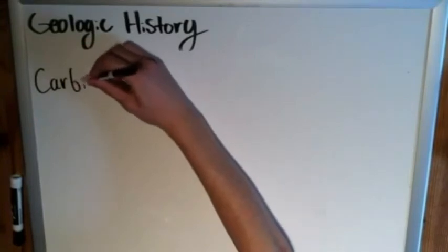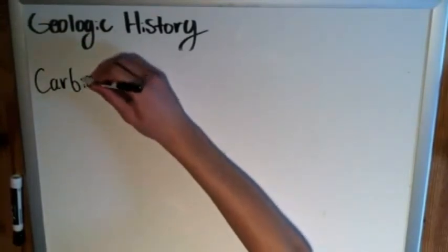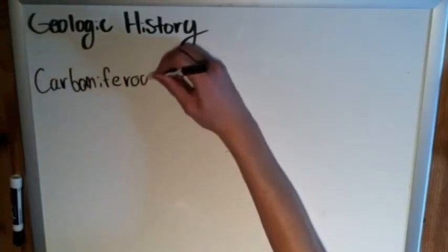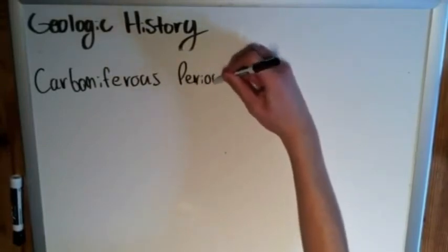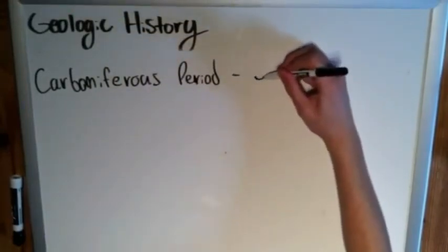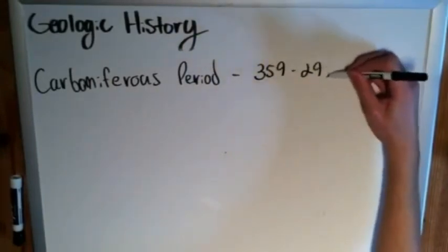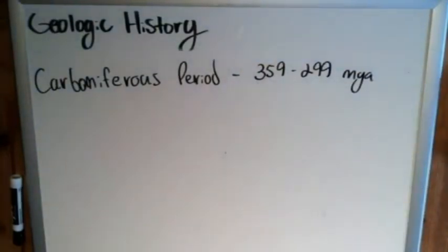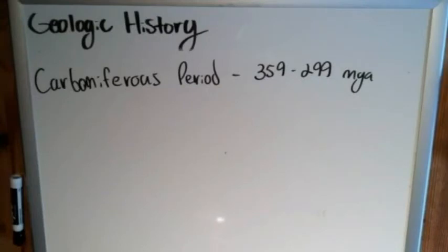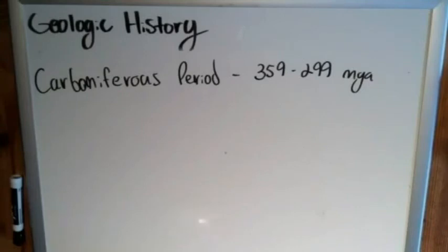The next one coming up is the Carboniferous period. Here in the U.S., this is frequently divided up into the Mississippian and the Pennsylvanian periods. Most of the world — and even in the U.S. — we understand what the Carboniferous period is, so we use that term. I'll make another video going further into that division.